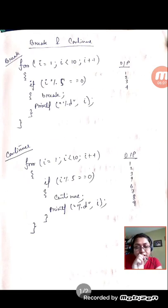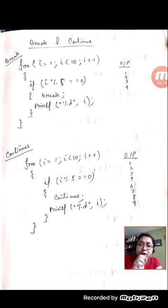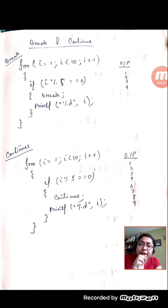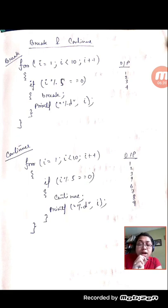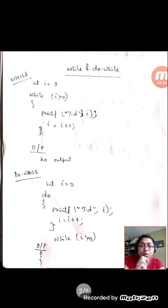To summarize: for break and continue — if the condition is met in a break statement, the control will never get back to the for or while loop. In case of continue, if the condition is met, the continue statement blocks that particular iteration and gets back to the loop to execute the rest. While is an entry control loop and do-while is an exit control loop. I hope this helps you understand these concepts.